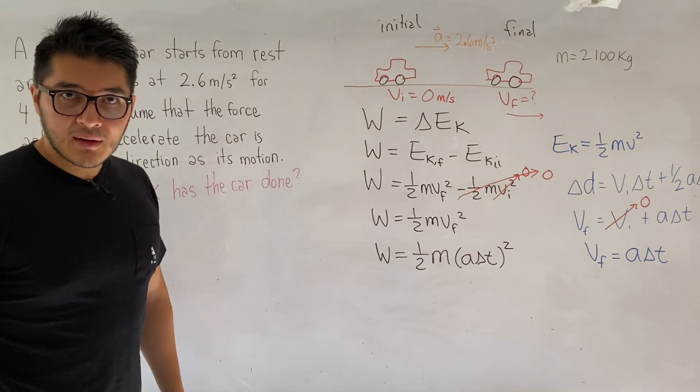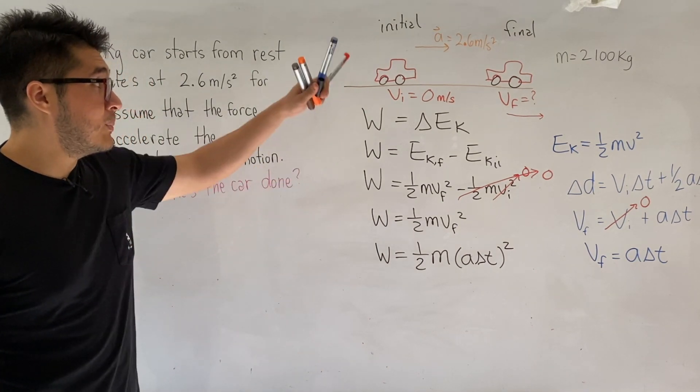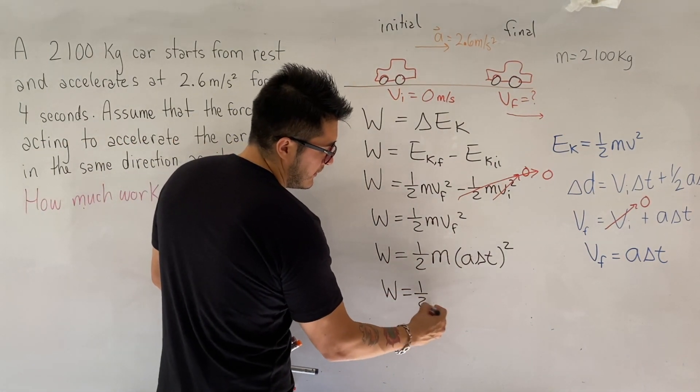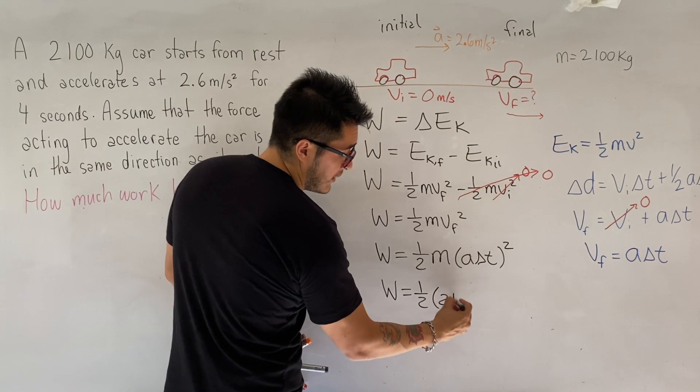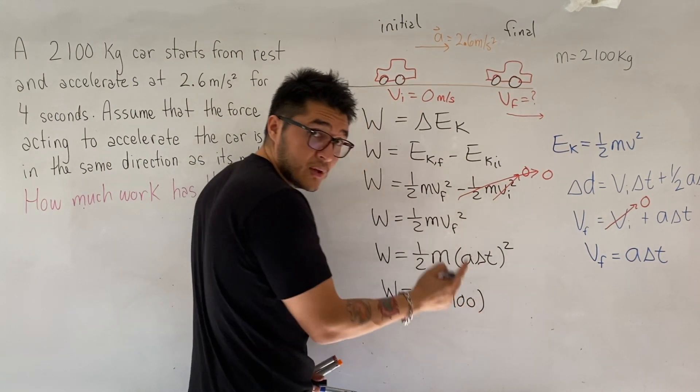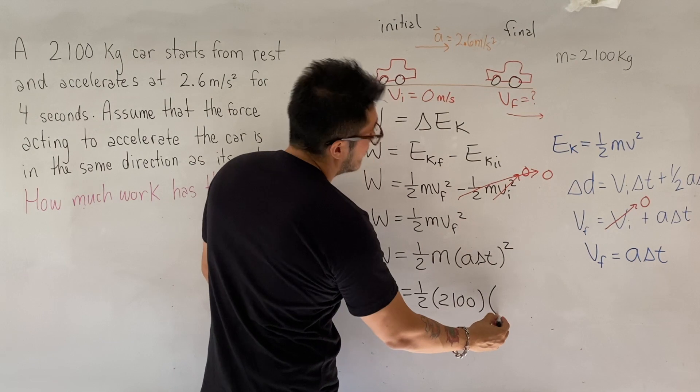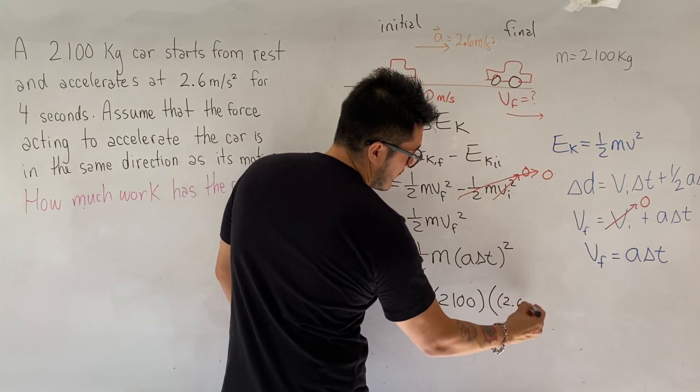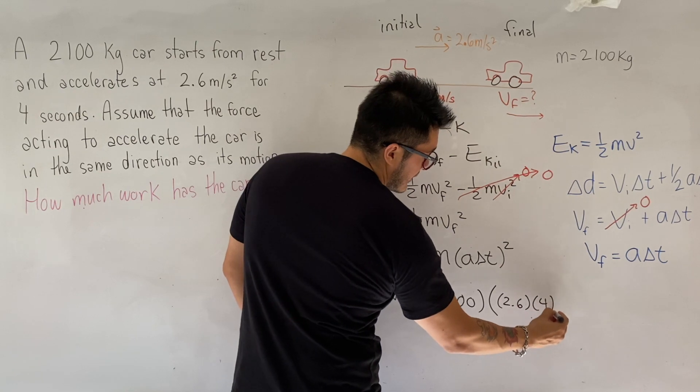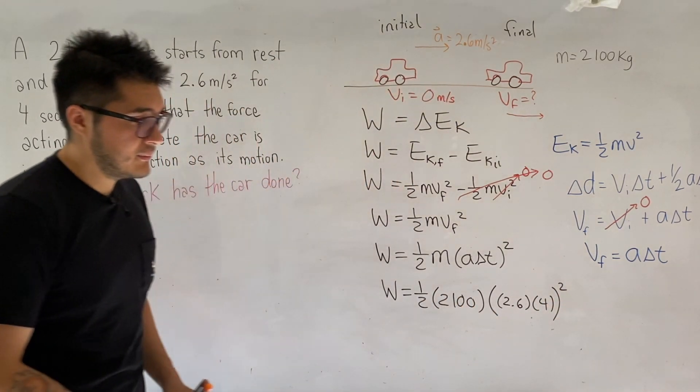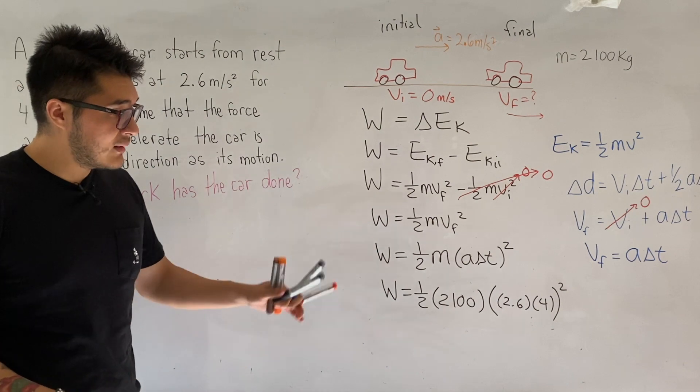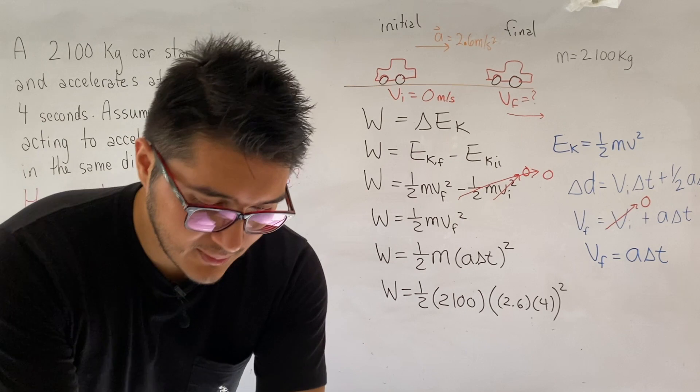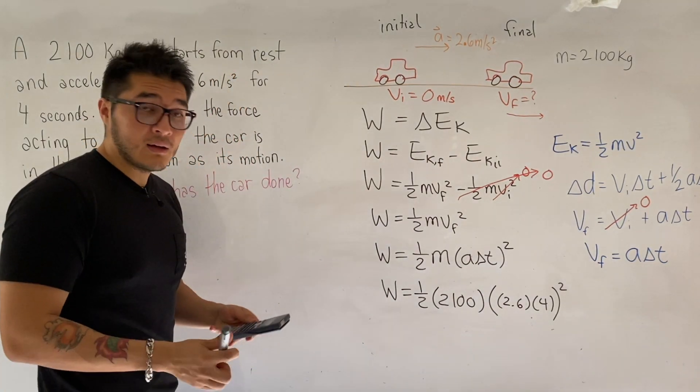So now we have everything in our equations to be able to plug in the numbers. So let's do that to calculate the work. The mass was 2,100 kilograms. Make sure that you're working with kilograms, right? Your acceleration is 2.6. The time is four seconds. All of that will be squared. So I like to use a lot of brackets. So that way, when I'm going to use the calculator now, there's less chances to make a mistake. So let's calculate this.